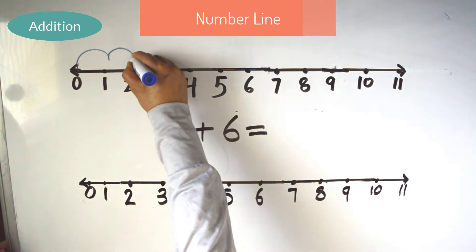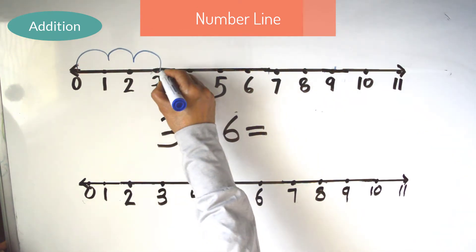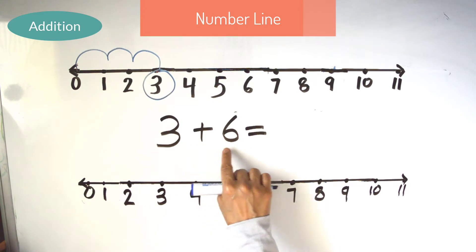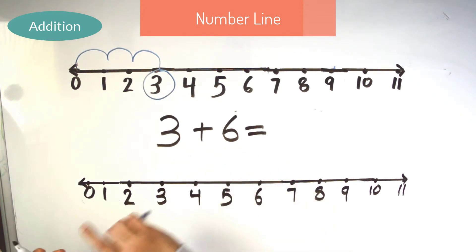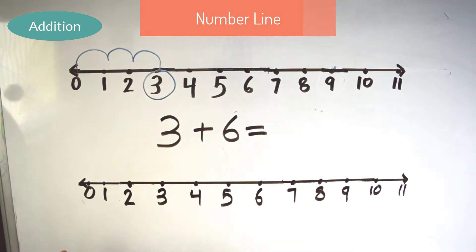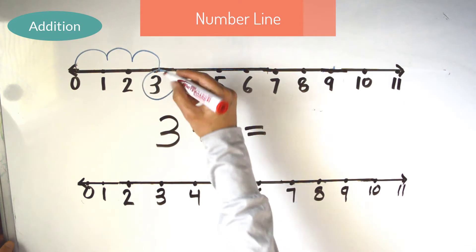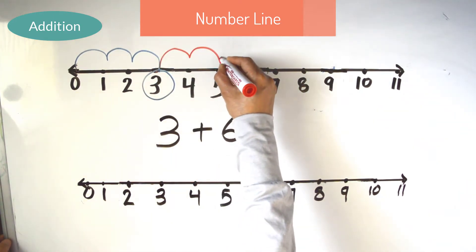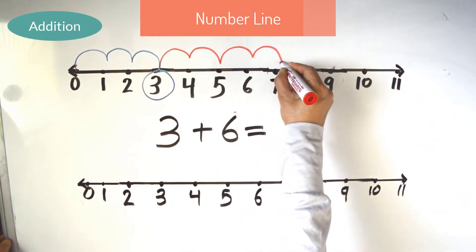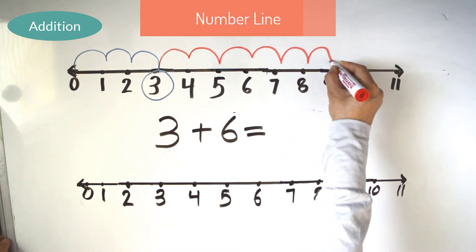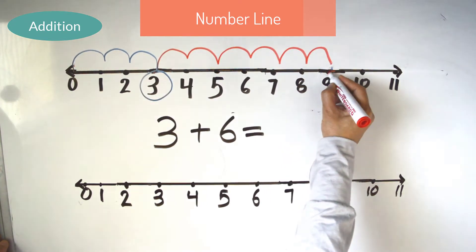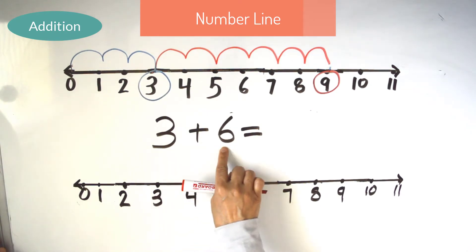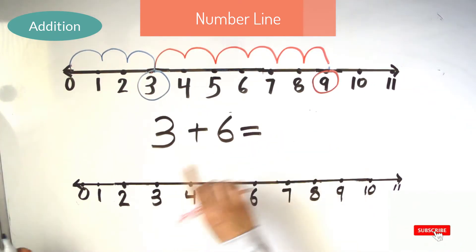1, 2, 3. Now let's add 6 more. So let's jump 6 more times. 1, 2, 3, 4, 5, 6. 3 plus 6 equals 9.